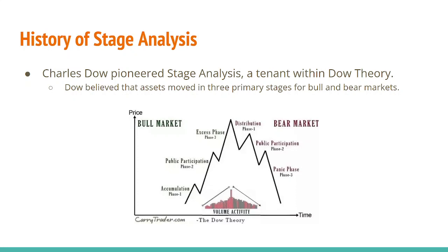Next we transition to the bear market. Phase one of the bear market is distribution. As you can see from the volume, we kind of peaked in trading activity — everyone knows about this, that's why the volume is so high. During this distribution phase one, the smart money that bought in the accumulation section is now selling out to the dumb money of the excess phase, and that's why you get these huge choppy moves. That's how you kind of hear about that churning of a stock — smart money is getting rid of it and they'll sell it to anybody that will buy it.